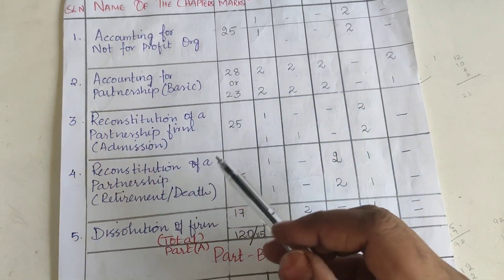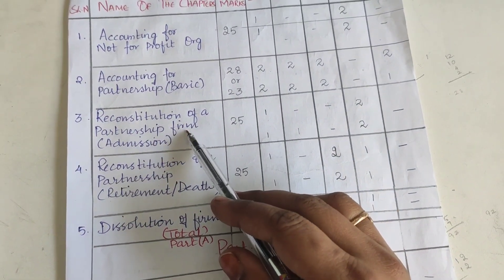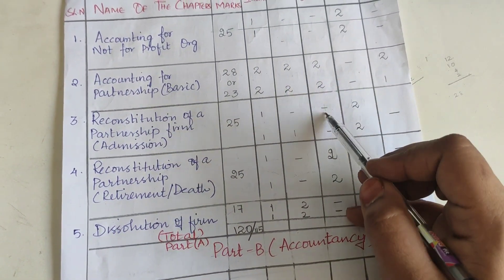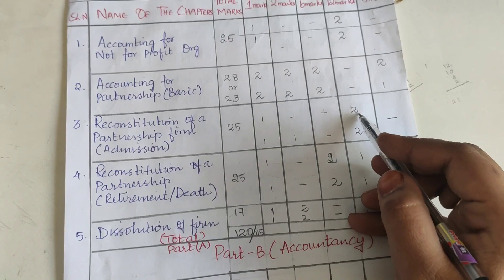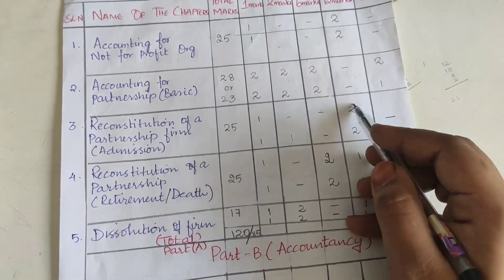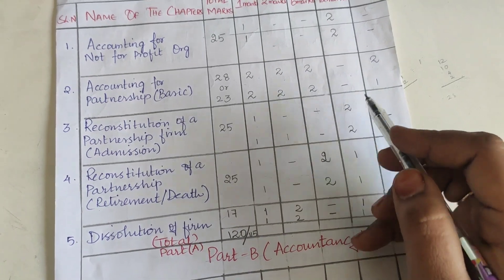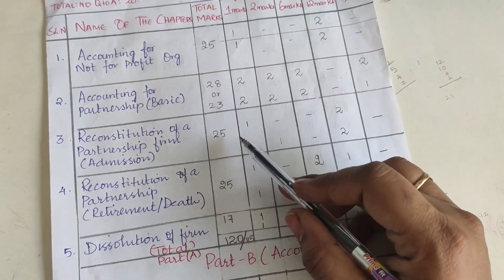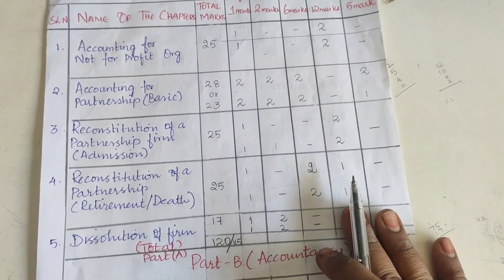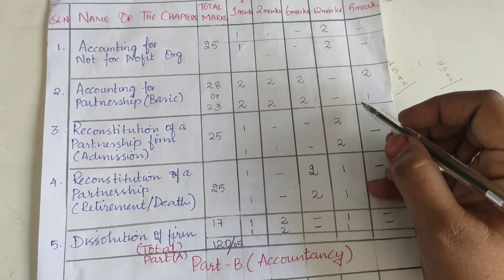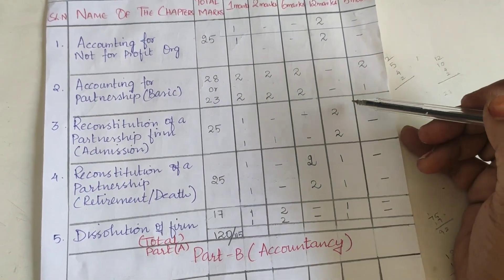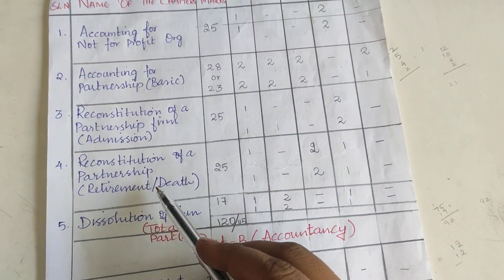The third chapter is Admission of a Partner. One mark will be asked, no practical, no six-mark, no two-mark questions. The 12-mark question will be asked twice, so you will be able to get 25 marks from this chapter. This is very helpful for answering 12-mark questions.